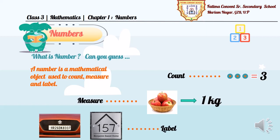As you see in the diagram given here, numbers are used to count the articles and also to measure objects. For example, 1 kilogram of apples. Numbers are also used to label house, vehicles and streets etc.